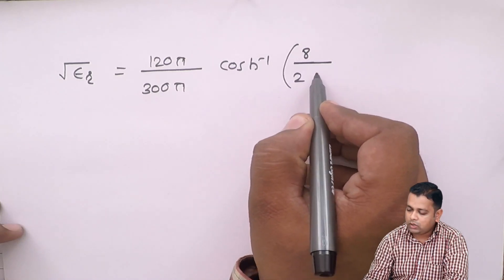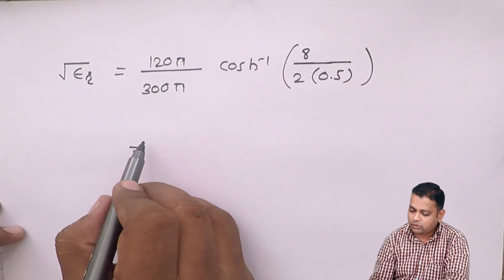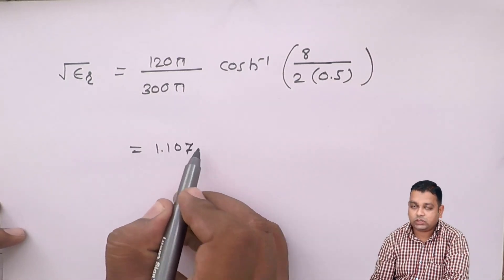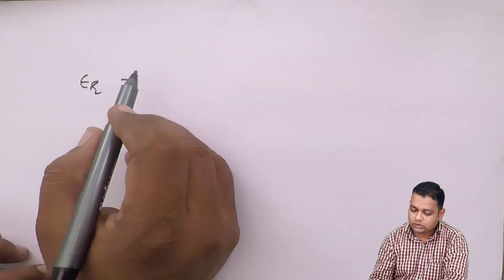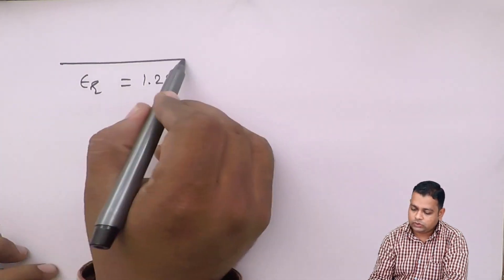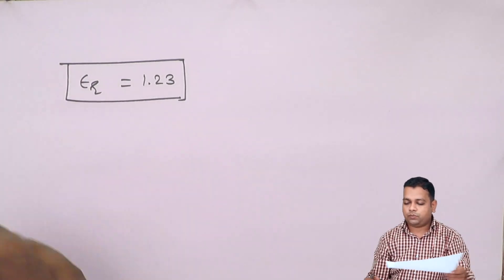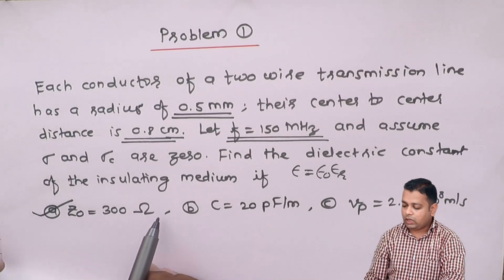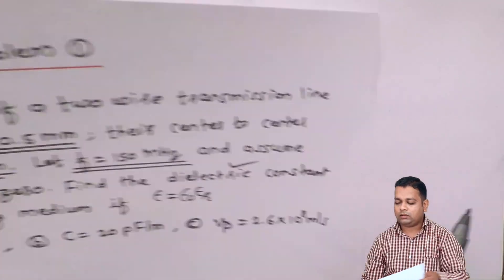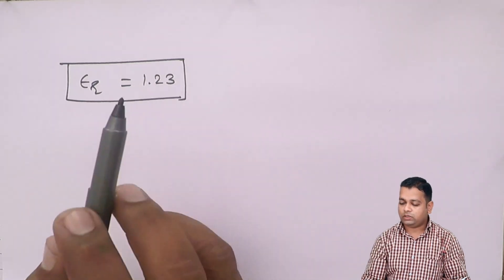It is given by 120 pi upon 300 pi cosh inverse, substituting the dimensions. It becomes 8 divided by 2 times 0.5. Therefore, the value of under root epsilon_r will be equal to 1.107. Hence, the epsilon_r, that is relative permittivity of the medium, the dielectric constant can be determined from this, becoming 1.23. This is the required value. With this particular value, we are covered with the first part of this problem statement.